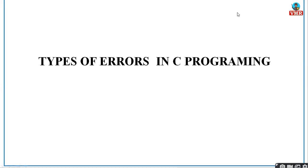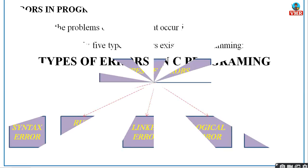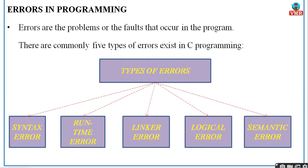Hello everyone. In today's lecture, we are going to see about types of errors in C programming, and also what is an object code and what is an executable code — two differences we will see. So first, what is an error? Error is nothing but a bug. In technical words, you will refer to an error as a bug.